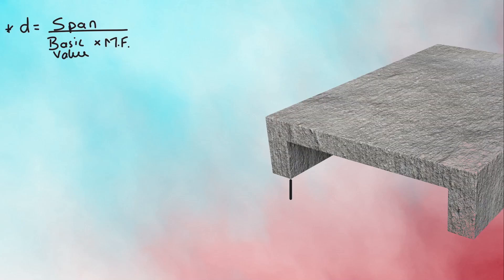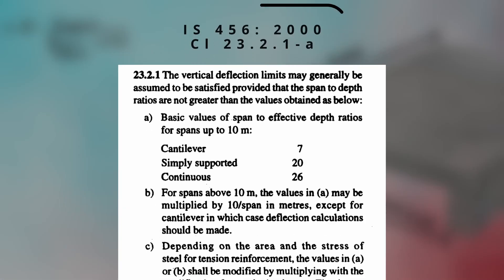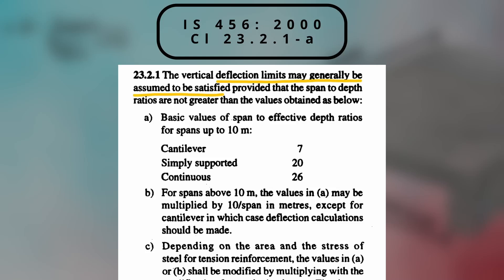Step 1 is to find the effective length and effective depth of the slab. Effective depth of the slab can be found using this formula, where span is the shorter length Lx. Basic value is taken as per Clause 23.2.1a, which says for different types of slabs, basic value generally ensures that the slab is within deflection limits.